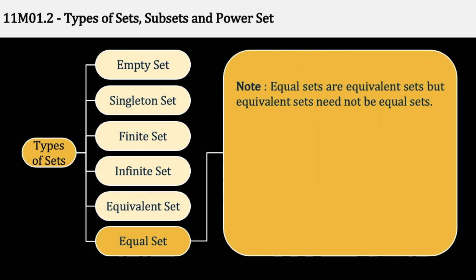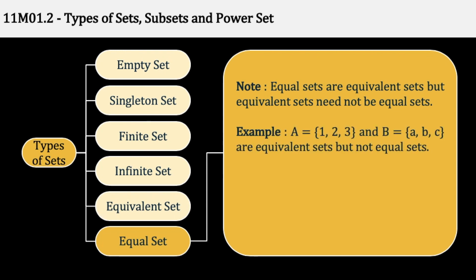Equal sets are equivalent sets, but equivalent sets need not be equal sets. हमने पढ़ा कि equivalent set में same number of elements होते हैं, पर equal set में सारे elements ही same होते हैं। इसकी वजह से सारी equal sets तो equivalent set होती हैं, क्योंकि number of elements same है, पर सारे equivalent set equal set नहीं होते, क्योंकि elements अलग-अलग हो सकते हैं। For example, A = {1, 2, 3} and B = {a, b, c} — these are equivalent but not equal।